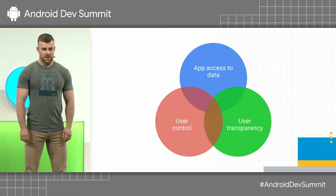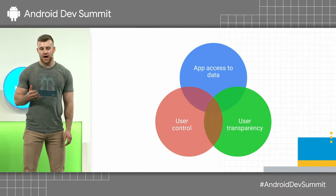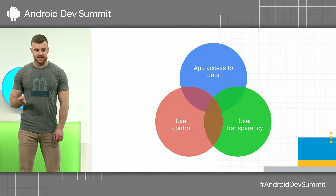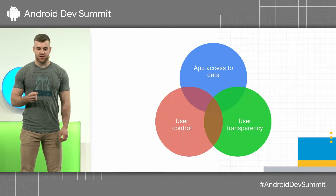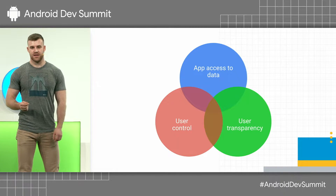To ensure Android can continue to serve as a platform that allows developers to build such experiences and protect users, we have ongoing efforts that span multiple releases. The themes we want to touch upon today are how your apps are accessing user data, ensuring that your users have control of the data being accessed, and most importantly, that there is transparency into why the data is required and how it is being used.